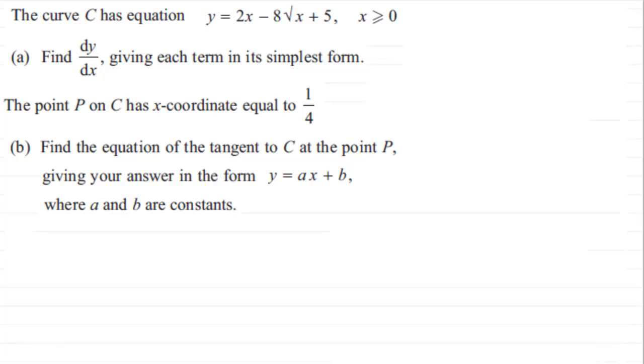Okay welcome back if you had a go. So what we've got here then is the curve C has equation y equals 2x minus 8 root x plus 5 where x is greater than or equal to 0. And in the first part we've got to find dy by dx giving each term in its simplest form.